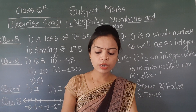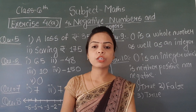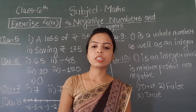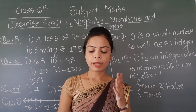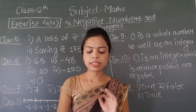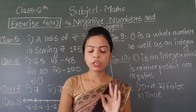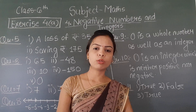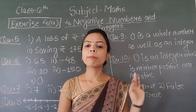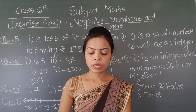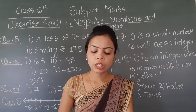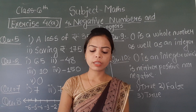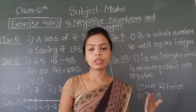For the third number line, on the right of 0 the numbers given are 20 and 40 — that means there is a table of 20. So on the left side we write with negative signs: minus 20, minus 40, minus 60, minus 80, minus 100, minus 120, minus 140, minus 160.